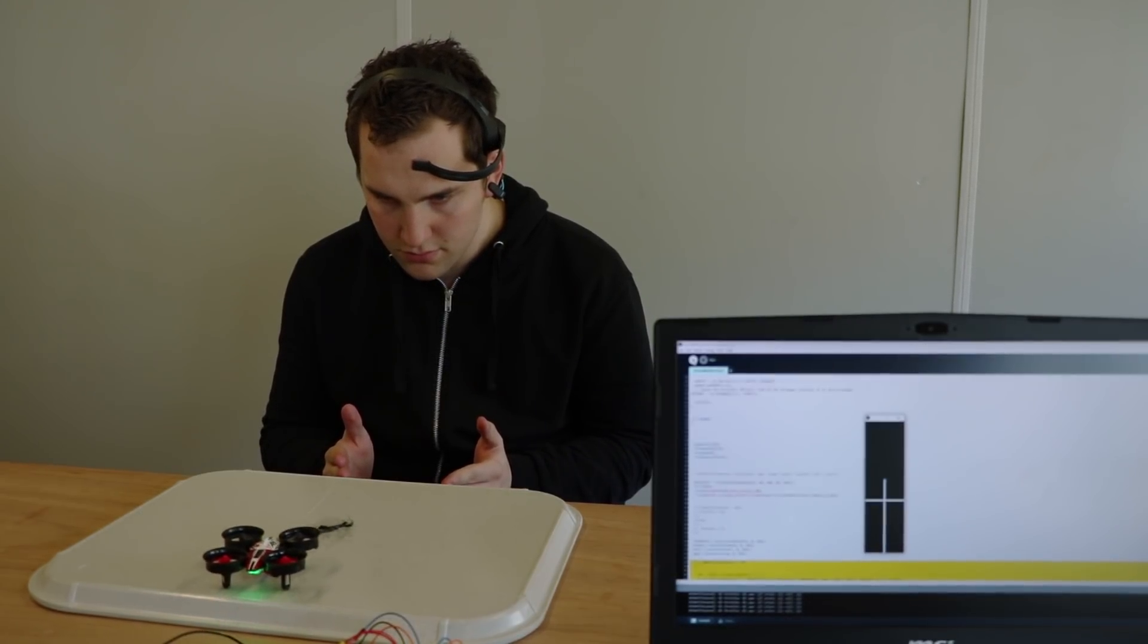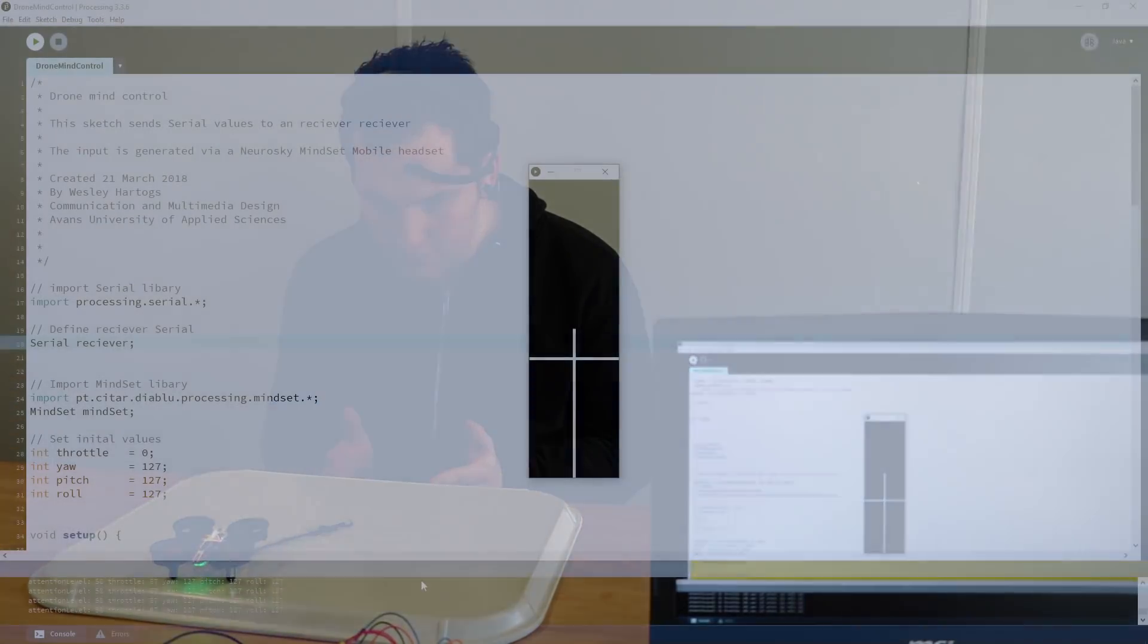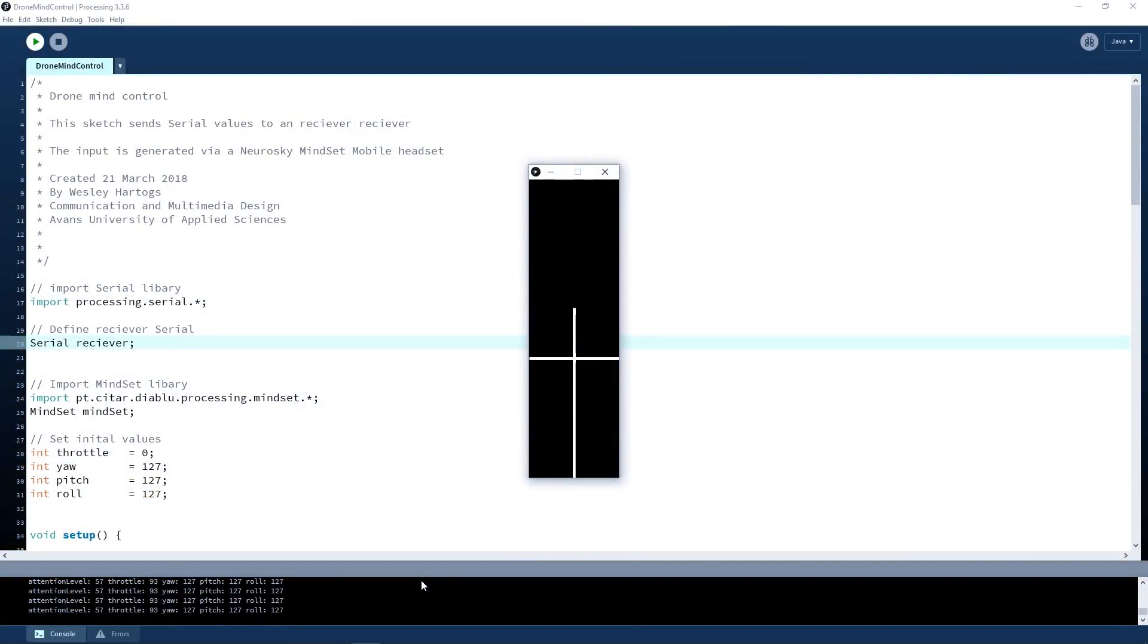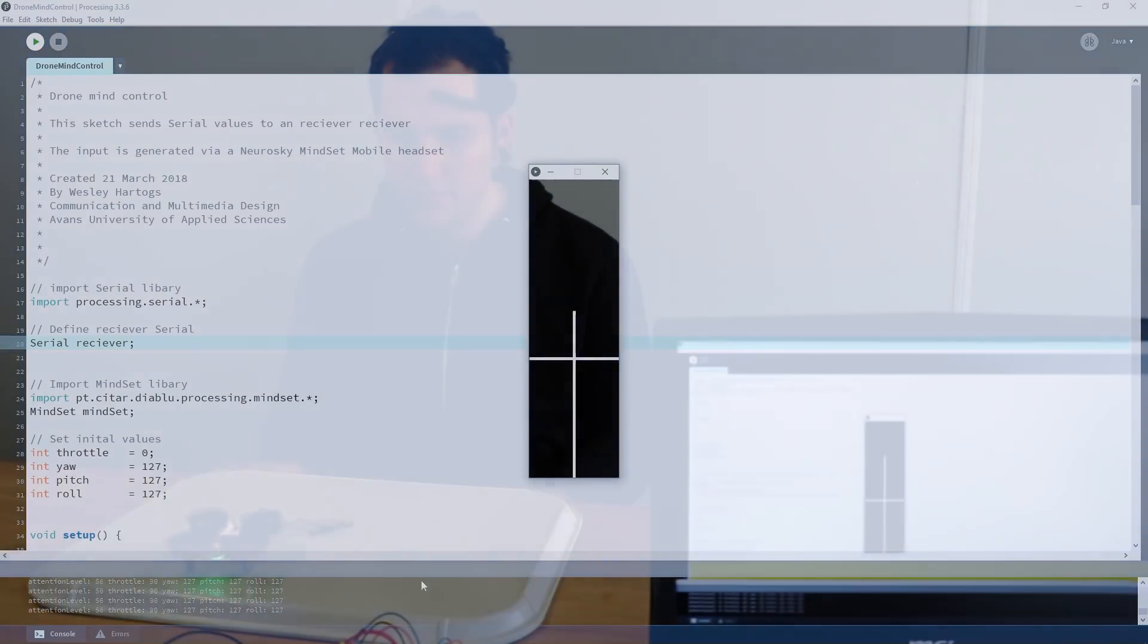The Processing sketch will visualize the amount of attention needed to lift off the drone. A minimum attention level of 40 is needed to start a lift off.